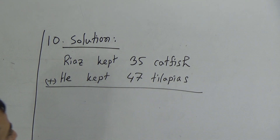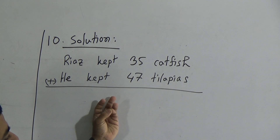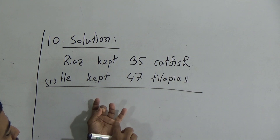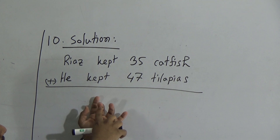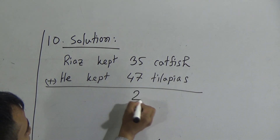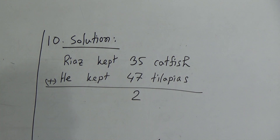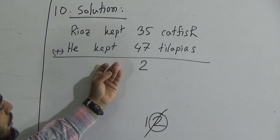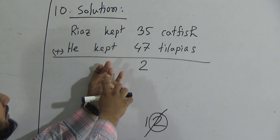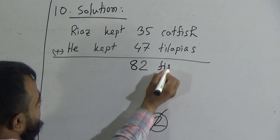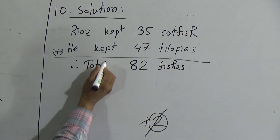We should add from the one's place first. Add 5 and 7. Counting up we get 12. So we write down the one's place digit 2 in the one's place, and 1 is carrying in our hand. Now, 3 and 4 of the ten's place need to add. Counting 3 and 4 gives 7, and the carried 1 makes 8. So 8 is in the ten's place. Therefore, in total there are 82 fishes. Total is 82 fishes.